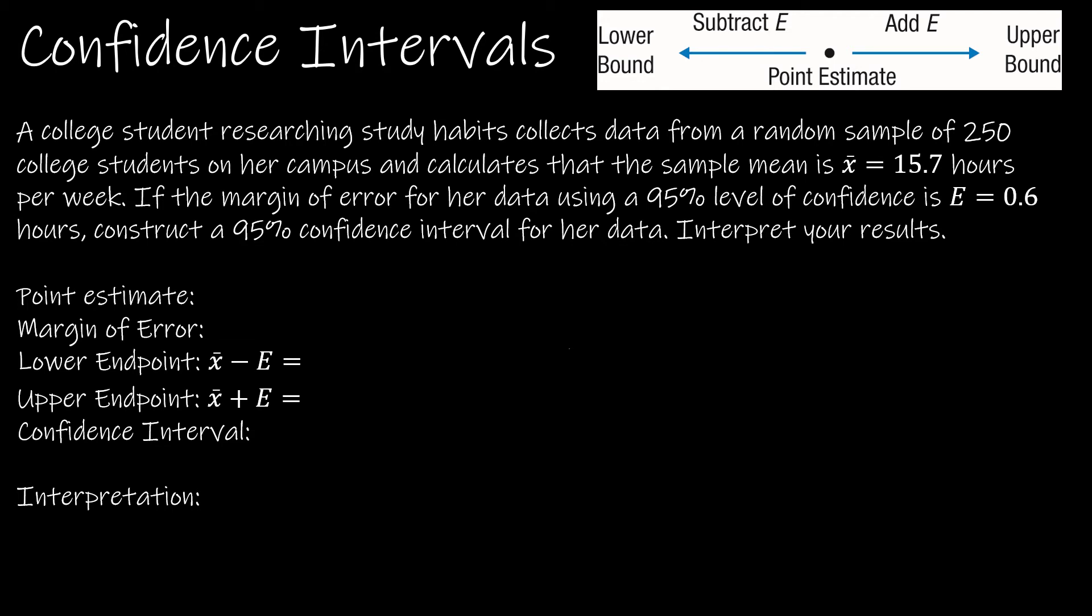So we have a college student researching study habits, collects data from a random sample of 250 college students on her campus and calculates that the sample mean is x̄. So remember, that's the notation we're going to use for a sample mean of 15.7 hours. So this is an important piece of information. And not for this question, but typically, this would be an important piece of information as well.